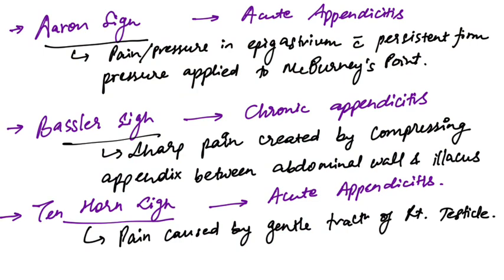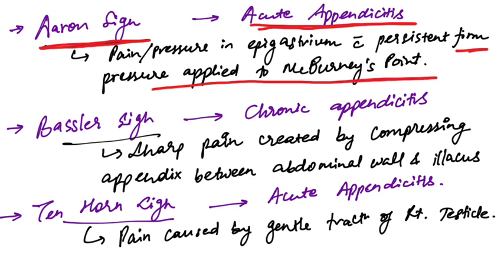Important clinical signs: Aaron's sign is found in acute appendicitis when increased pressure in the epigastrium with persistent firm pressure applied to McBurney's point occurs. Bassler's sign is sharp pain created by compressing the appendix between the abdominal wall and iliacus, seen in chronic appendicitis.